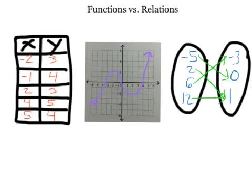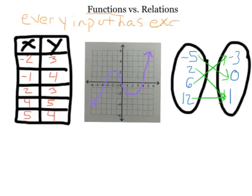When looking at a relation, you can determine if it is a function. A function is a special type of relation where every input has exactly one output, or every x has exactly one y. Every domain value has exactly one range value. Whichever way you think of it, it means the same thing.